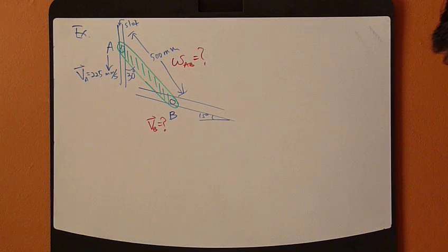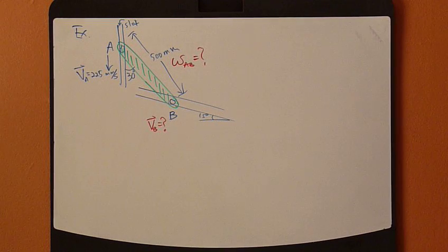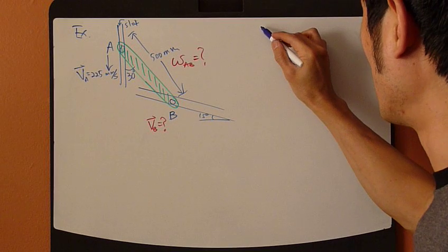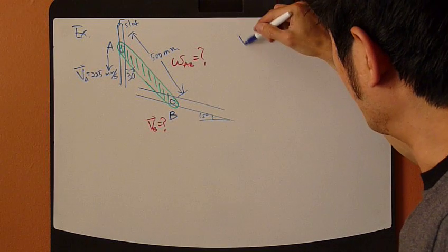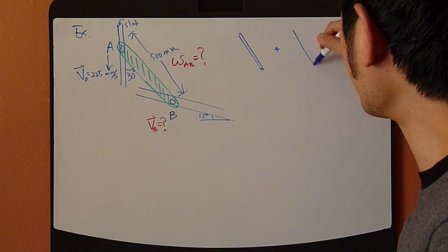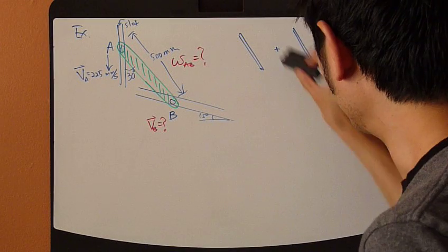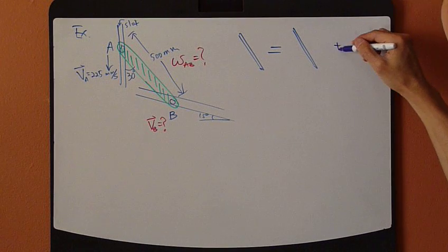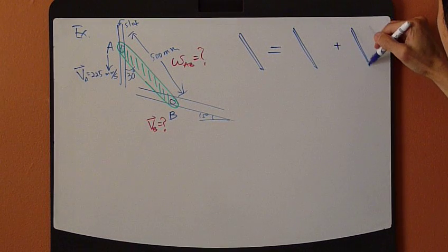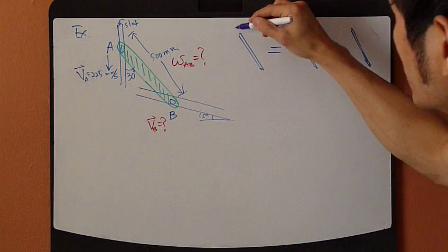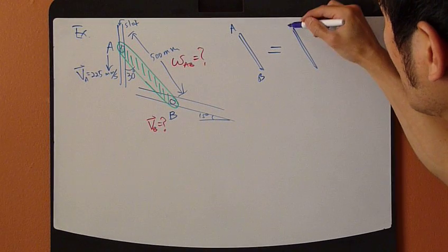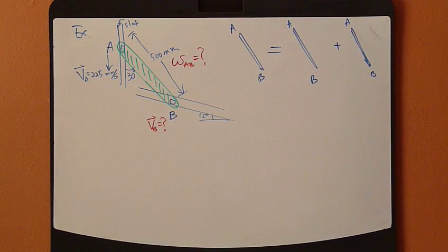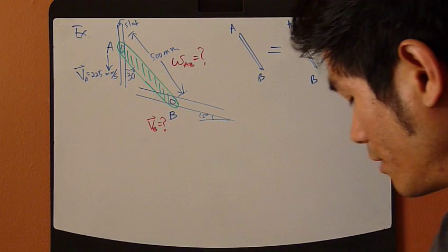So let's continue with the analysis procedure. I'm going to draw this rigid body three times. Actually, rigid body motion equals translation plus pure rotation. So that's my A and B, A and B, and B. Just do it three times.